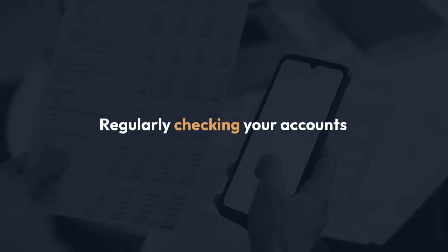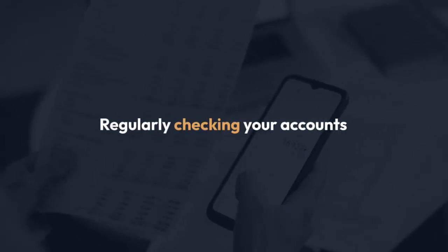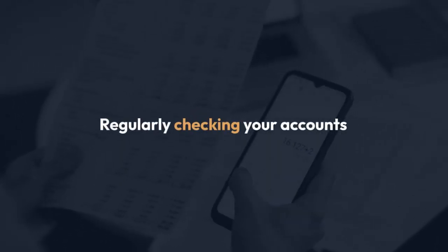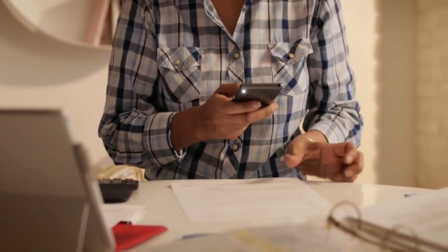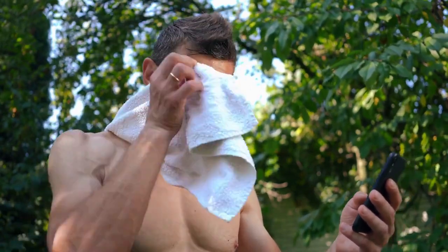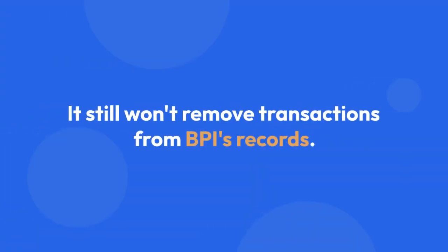Step 5: To make your transaction history less cluttered, you could consider regularly checking your accounts. Alternatively, you might download or print your transactions for record-keeping purposes if needed, and then clear the app's cache. Clearing the cache might help free up space on your phone, and it sometimes seems to refresh the app, providing a cleaner slate, but it still won't remove transactions from BPI's records.